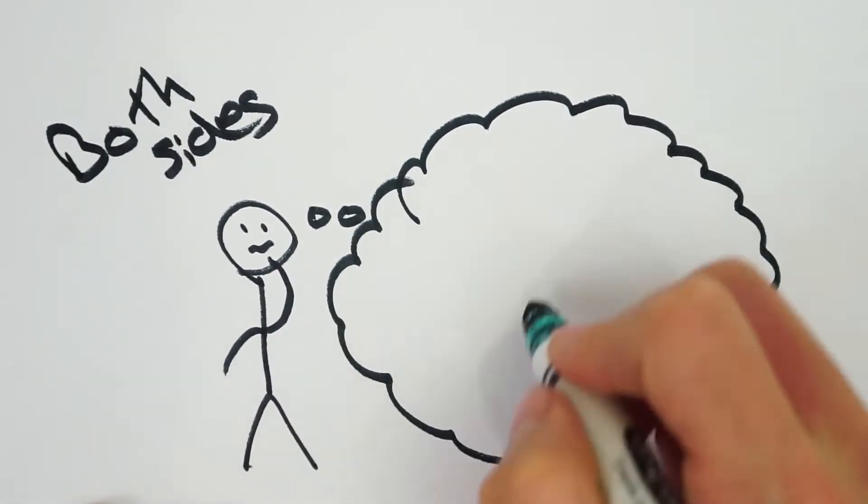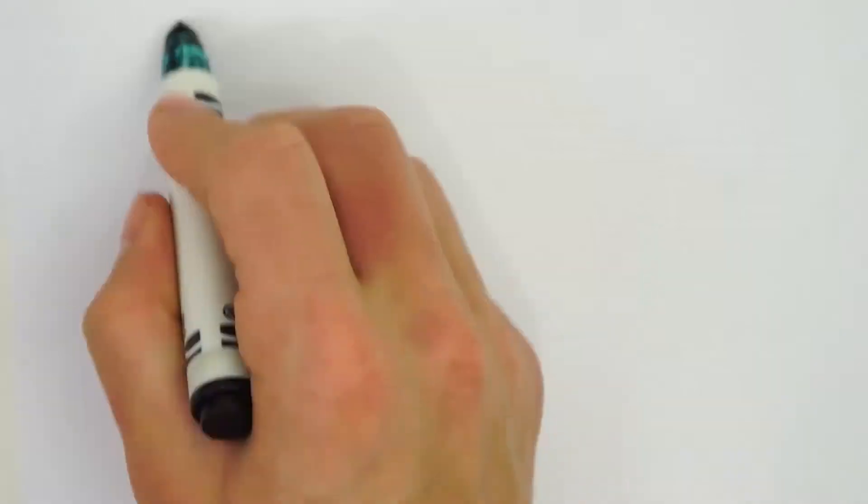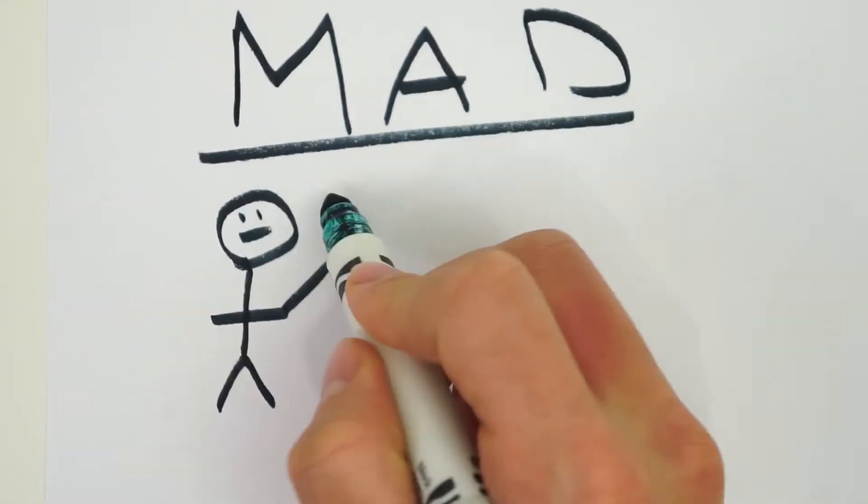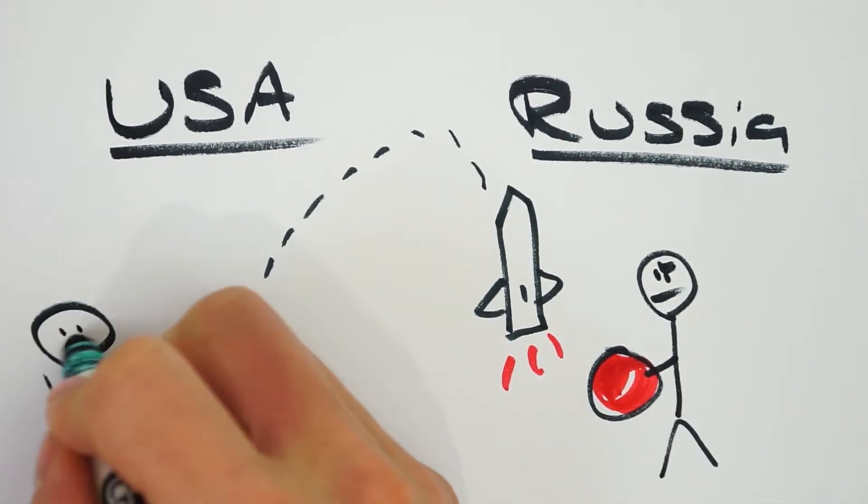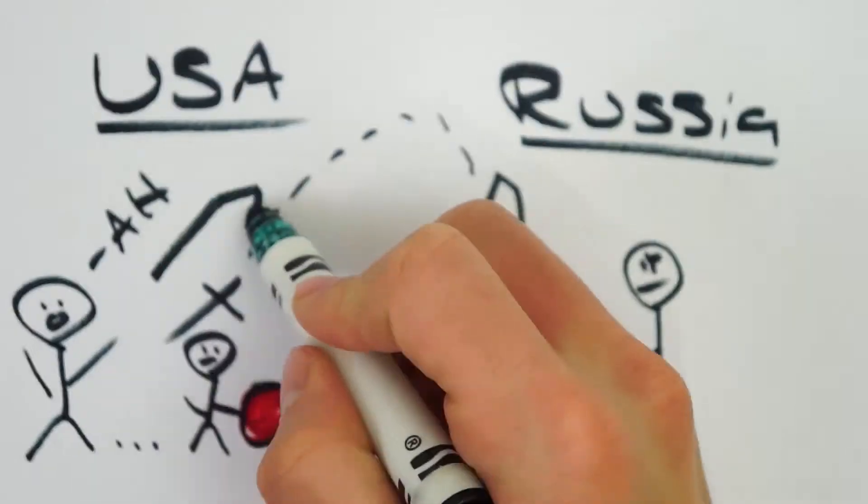This led defense secretary Robert McNamara to come up with mutually assured destruction, or MAD. The idea was that if either side attempted to obliterate the other, the other side would launch a nuclear attack to ensure that both nations were destroyed.